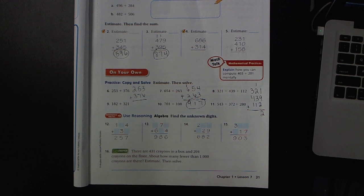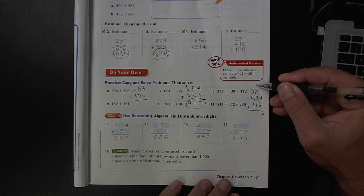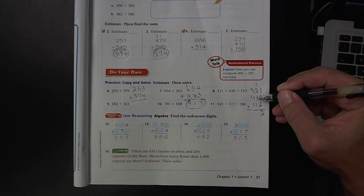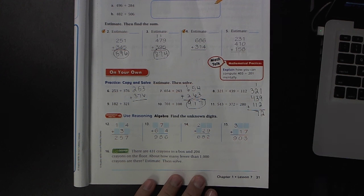2 plus 1 is 3, plus 3 is 6, plus 1 is 7. There's no carrying there.